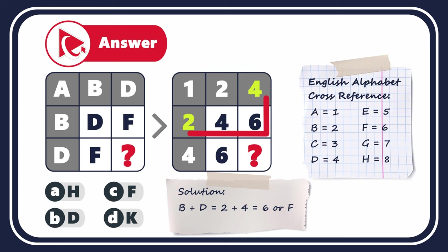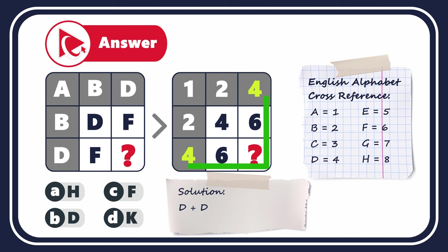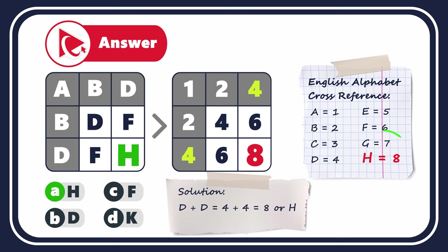2 plus 4 equals 6, the result in the third row. The missing number at the intersection of 4 and 4 is calculated as 4 plus 4, which equals 8. So the correct answer is choice A, H — the letter that corresponds to the number 8.